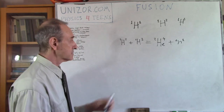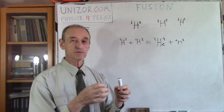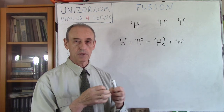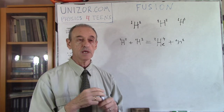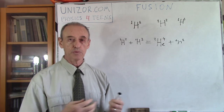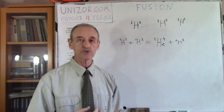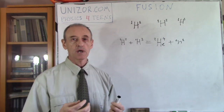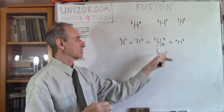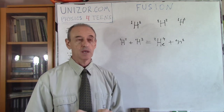This is not a simple thing, because to bring together from a relatively large distance two hydrogen nuclei is not easy — they are electrostatically repelling each other. This means we need very high temperature and high pressure to apply to these two nuclei to combine them together into helium.